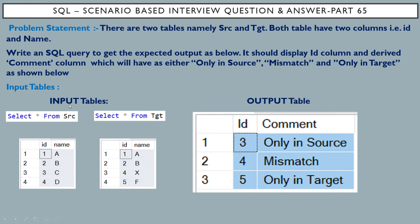It says that there are two tables, namely source and target, and both these tables have only two columns called ID and name. We have to write an SQL query to get the expected output as shown. It should display an ID column and a derived column called comment, which will have either 'only in source', 'mismatch', or 'only in target'.